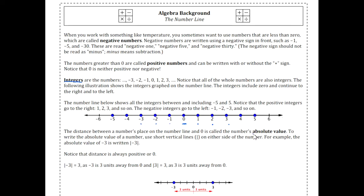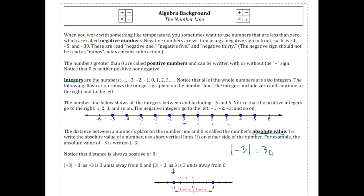A very useful way of depicting distance with mathematics is called the absolute value. We use vertical bars to depict that absolute value. We would read this as 'the absolute value of negative three.' It's a distance — the distance of the number from zero on the number line. Negative three, which is positioned here, is a distance of three away from zero. You have to go one, two, three units to get back to zero. Therefore, the distance of negative three from zero is three, and its absolute value is positive three.